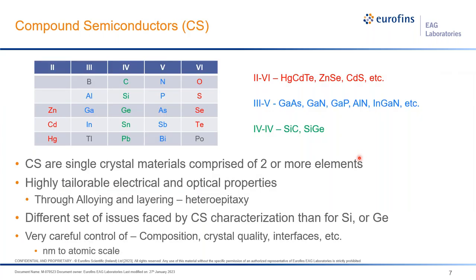Compound semiconductors are single crystal materials comprised of two or more elements, typically from the 2-6, 3-5, and 4-4 groups in the periodic table. They are highly tailorable materials as far as their electrical and optical properties go, through various alloying and layering—like heteroepitaxy. There are quite different issues faced by compound semiconductor characterization compared to silicon or germanium, as we really need to precisely analyze composition, crystal quality, and interfaces to effectively control the optical and electrical properties.